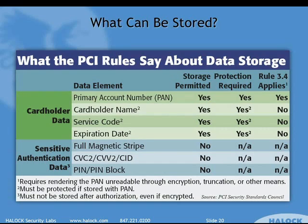What can you store? What can't you store? The stuff in green, you can; the stuff in blue, you can't. The primary account number — the actual, usually 16-digit number on the front of the card — yes, you can store it, but it must be encrypted according to requirement 3.4, or rendered unreadable anywhere it's stored. Cardholder name, service code, and expiration date go along with the card number. If stored in conjunction with the PAN, they must also be protected — not necessarily via encryption under requirement 3.4, but they have to be protected. You can store all those things.